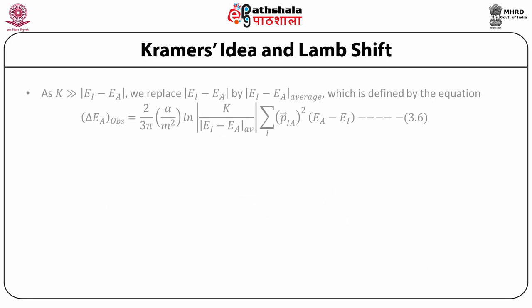As K is much greater than Ea minus Ei, we can replace Ea by (Ea minus Ei) average, which is defined by the equation: delta Ea observed equals 2 over 3 pi alpha by m squared, log of K divided by |Ea minus Ei| average, multiplied by the sum of P_ia squared times (Ea minus Ei).